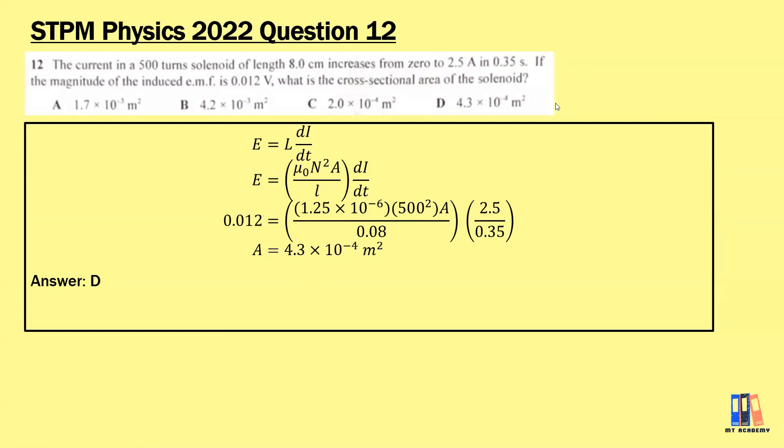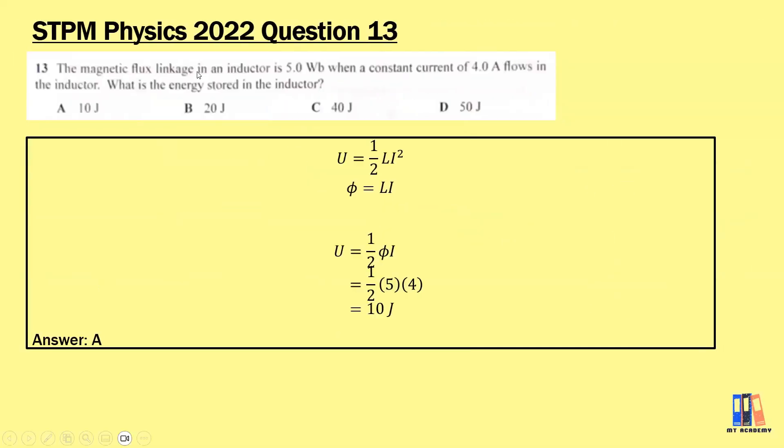We move on to the next question, Question 13. Magnetic flux linkage in the inductor is 5 weber when a constant current of 4 ampere flows in the inductor. What is the energy stored in the inductor? We learn that energy is ½LI², but we don't have the self-inductance. You could use the formula φ equals LI to replace the L in the formula. Then we have U equals ½φI. Now we have all those values. We have half multiplied by the φ, which is 5 weber, multiplied by the current 4 ampere. So the answer here will be equal to A, 10 joules.